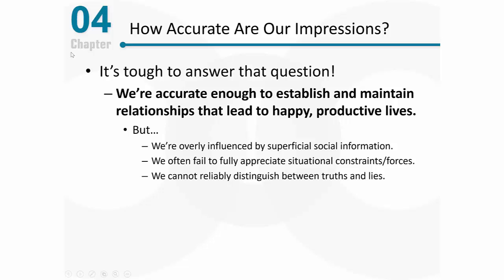We cannot reliably distinguish between truths and lies. In order to make sense of people, we need to be able to believe what they're saying, and we know that sometimes people are not saying truthful statements. We often focus on the wrong cues, and if we're not able to distinguish between truths and lies, that's a serious limitation. We often rely on mental shortcuts that lead to a host of biases — cognitive heuristics allow us to process information very quickly, but sometimes that really comes at a cost.